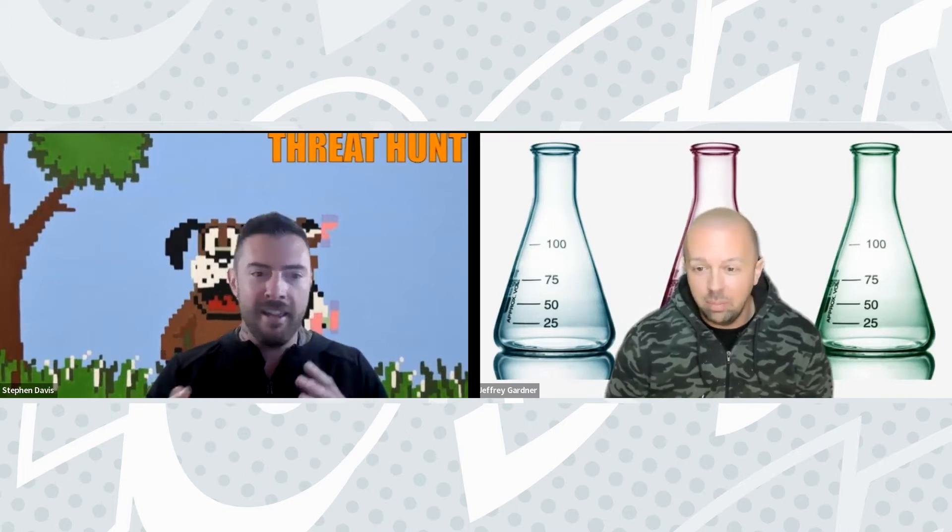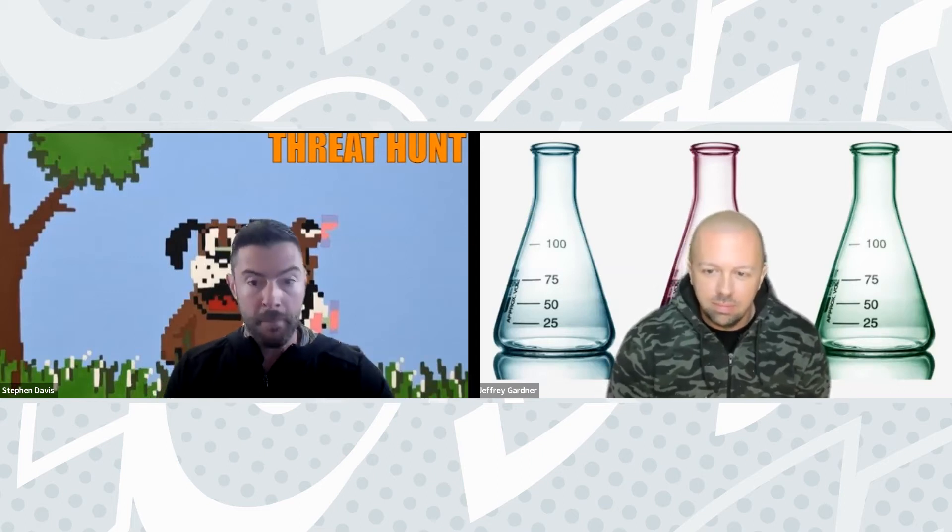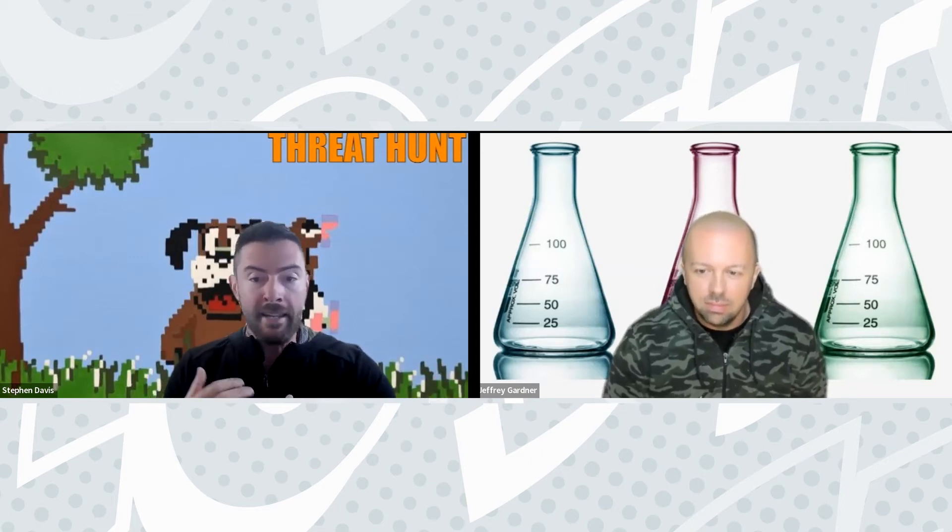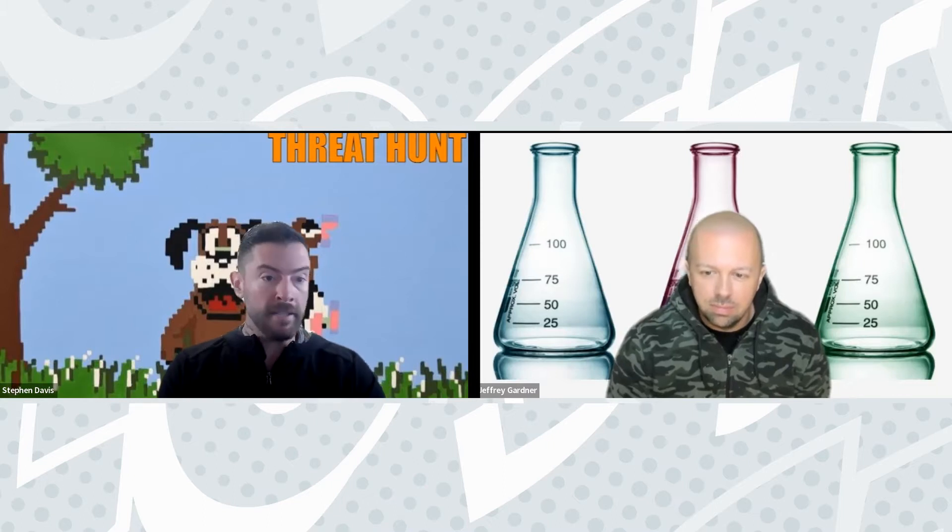Something odd, suspicious, or just not right in your environment that rings a bell based on past experiences. The second thing is that it has to be testable — meaning you have to have access to the data, tools, and techniques required to test out your hypothesis. So: observable and testable.